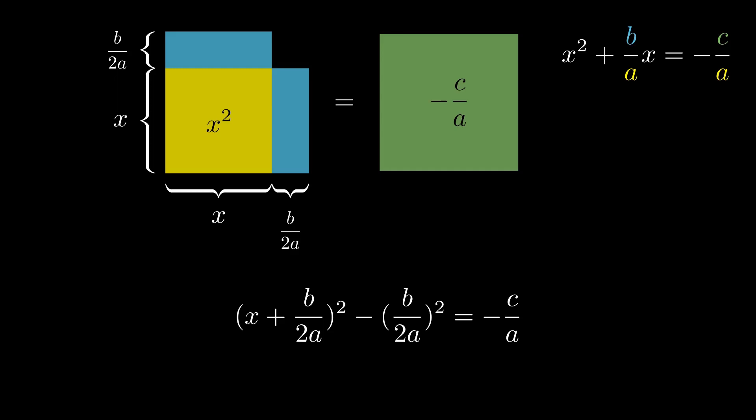We now have to do some algebra in order to solve for x. We can start by multiplying out b over 2a squared. And then we can move it over to the right side. In order to get the common denominator on the right side, we can multiply negative c over a with 4a over 4a. And then rearrange the fractions.